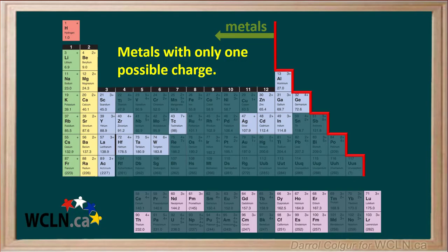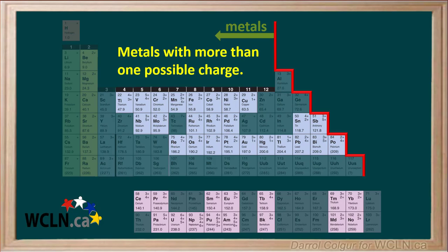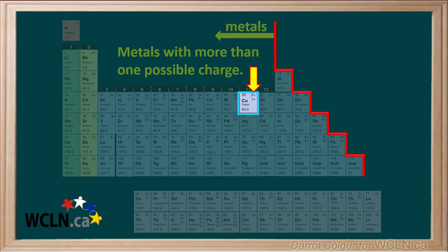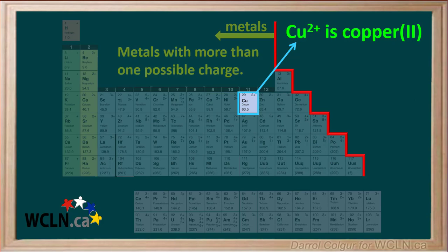If a metal cation is combined with a polyatomic ion, we need to determine whether the metal cation has only one possible charge or more than one possible charge. If an element has only one number on the top right of its box, such as silver, it has only one possible charge, so there is no Roman numeral after its name — Ag⁺ is simply called silver. But if the cation has more than one possible charge, like copper, which has 2+ and 1+, then the charge must be indicated with a Roman numeral. If copper has a charge of 2+, the name is copper(II); if copper has a 1+ charge, its name is copper(I). We determine which charge a cation has using the negative charges on the anion.